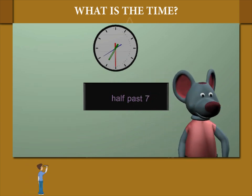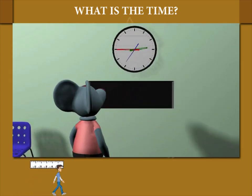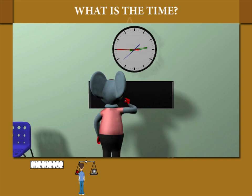Toby now moves to the third clock which shows the time as 2:45. Toby writes on the board quarter to 3.